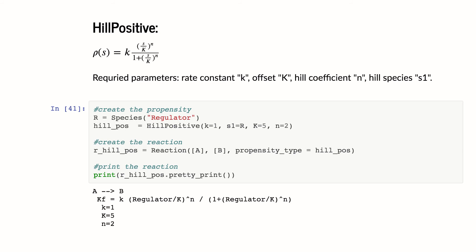I call it R hill positive. And I just type in reaction. I have my inputs A goes to B. And my propensity type is hill positive. And I just passed in this guy to here. And I can print it out. And it's going to show me what that looks like with all the parameters, as well as my rate.